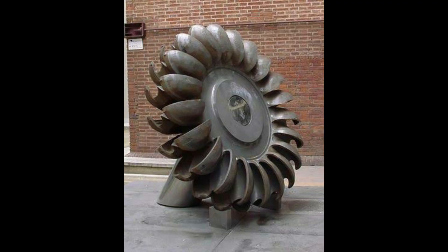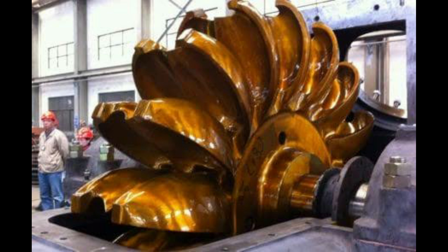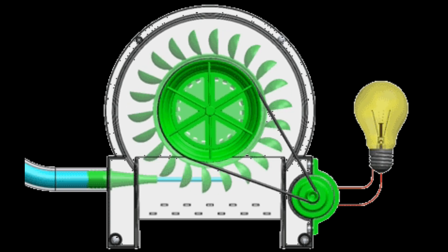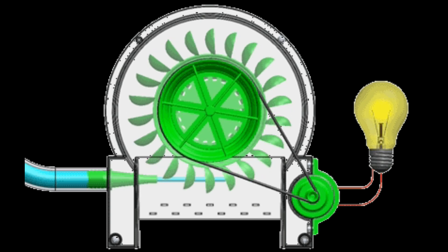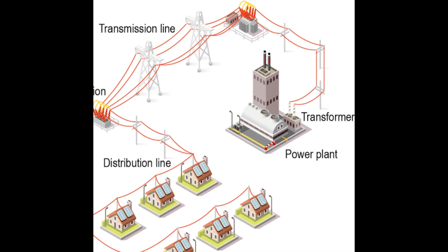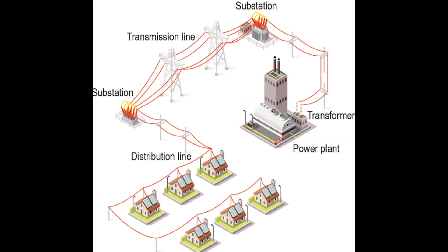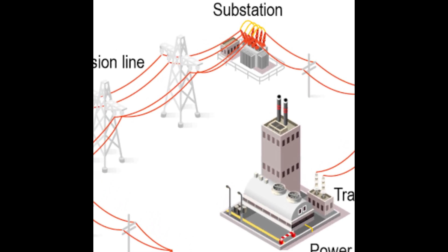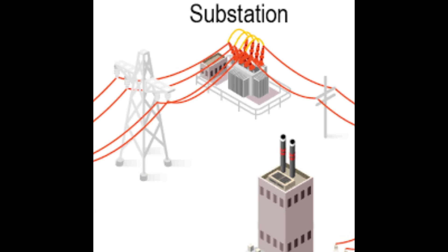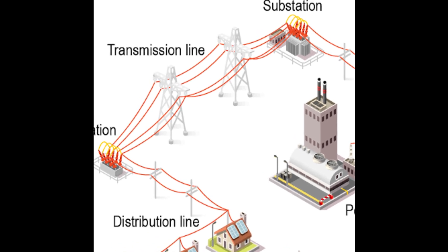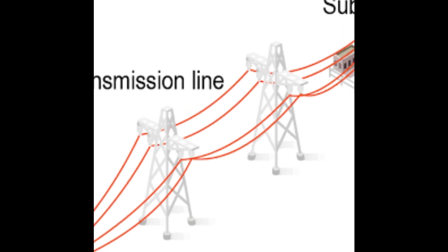The high-head type is the Pelton Wheel Turbine. The hydroelectric power plant uses the Pelton Wheel Turbine for high-head applications. The voltage generated has to be connected with a power grid, connected especially through a substation.